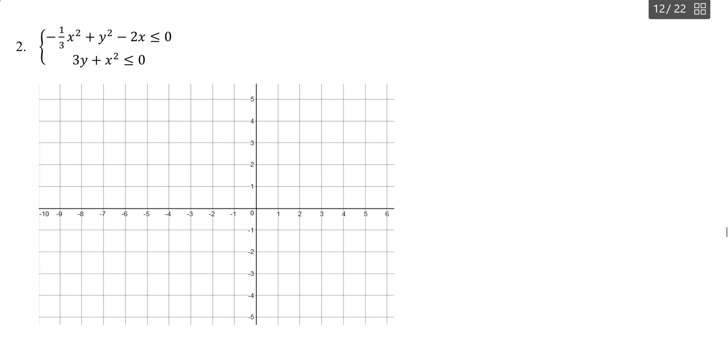So looking at the first inequality that we have, again, let's identify which type of conic it is. Go ahead and take a look at the x squared coefficient and the y squared coefficient. One's positive, one's negative, which means that we will have a hyperbola.